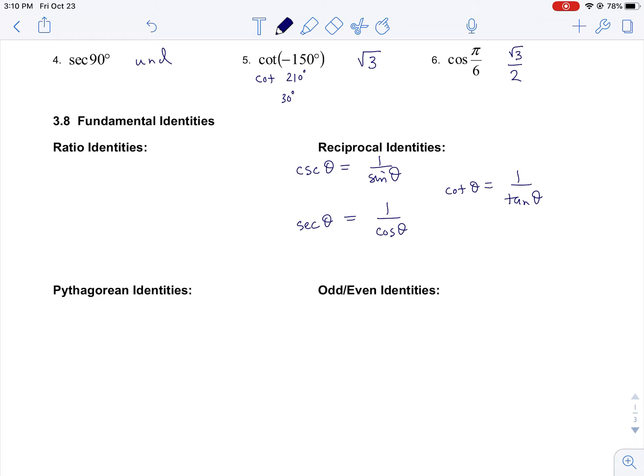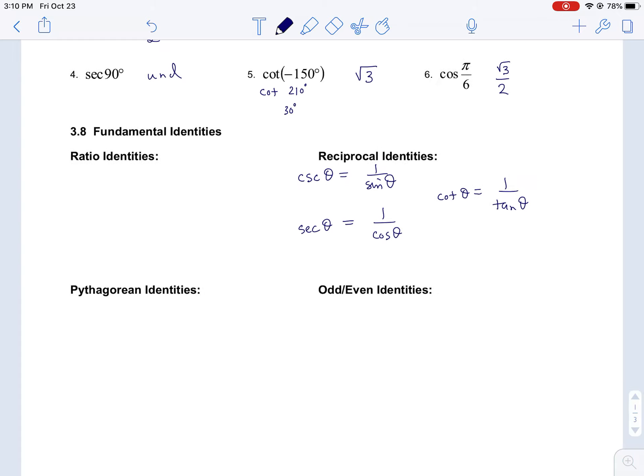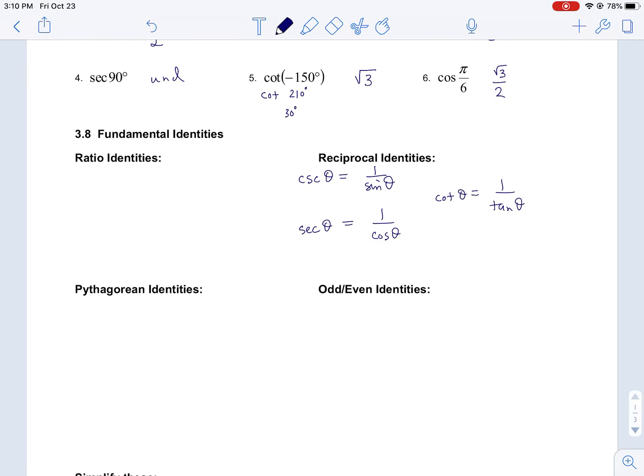And you could write them in any order. We could also write tangent equals 1 over cotangent. Reciprocals work both ways.